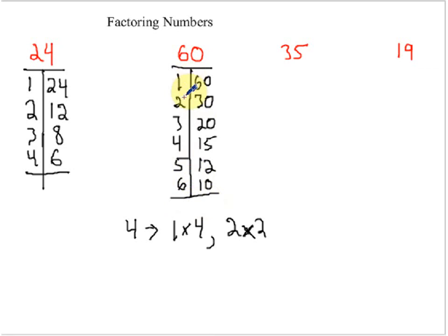All of our factors: one, two, three, four, five, six, 10, 12, 15, 20, 30, and 60. Again, you know you're done once you start counting and you find a number that's already on your list.